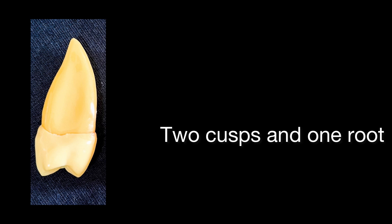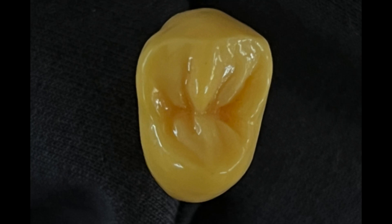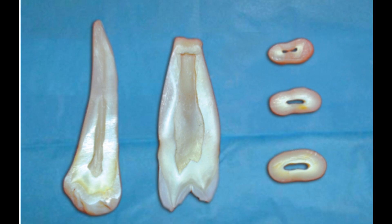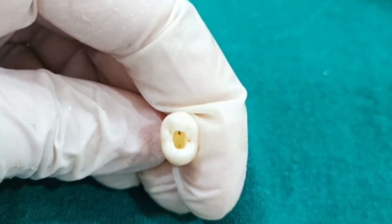The maxillary second premolar closely resembles the maxillary first premolar. They are less angular, exhibit a more rounded appearance, and have two cusps of nearly the same size. The cervical cross-section of the root shows a flattened oval canal. The access cavity preparation is oval, similar to the first premolar's. The maxillary second premolar generally has a single root with a single indistinct canal. When two canals occur, they may be distinct and separated along the entire length of the root, or they may converge to form a common canal as they approach the apex.